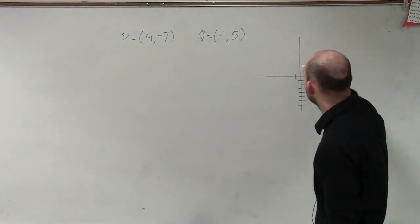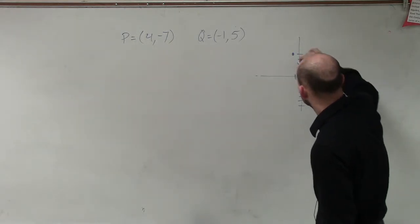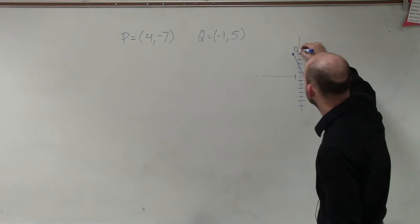And it goes up to negative 1, 5. So here's our initial point P, and here's our endpoint Q.